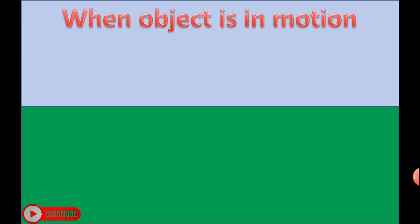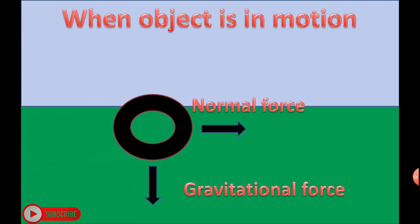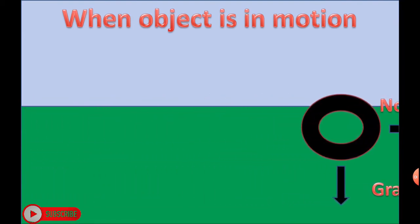When an object is in motion, the force acting on it is balanced force, which means gravitational force is equal to normal force and the object remains in motion.